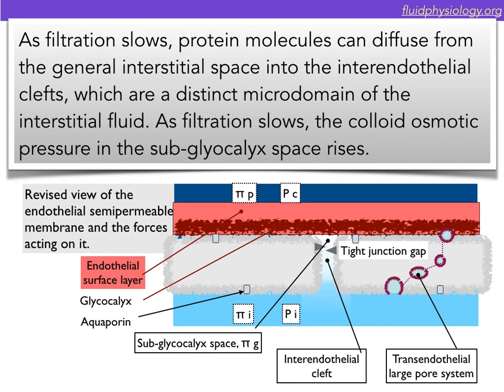Capillary pressure is highest at the point at which blood enters the capillary from an arteriole. As blood moves along the capillary, hydrostatic pressure falls, and as a consequence, filtration slows. As filtration slows, protein molecules can diffuse from the general interstitial space into the inter-endothelial clefts, which are a distinct micro-domain of the interstitial fluid. As filtration slows, the colloid osmotic pressure in the sub-glycocalyx space rises.